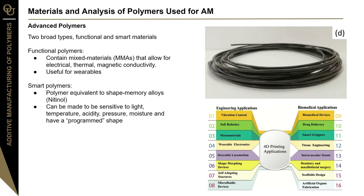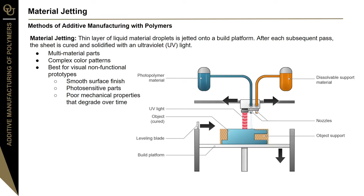There are various additive manufacturing methods used for printing polymers. Material jetting is one in which a thin layer of liquid material droplets is jetted onto a build platform. After each pass, the sheet is cured and solidified with ultraviolet light, working much like a 2D inkjet printer but on a 3D scale. Advantages include the ability to print multi-material parts and incorporate complex color patterns. It's best used for non-functional prototypes requiring a high-quality smooth surface finish. Unfortunately, parts are photosensitive with poor mechanical properties that degrade over time, which is why it's ideal for non-functional components.